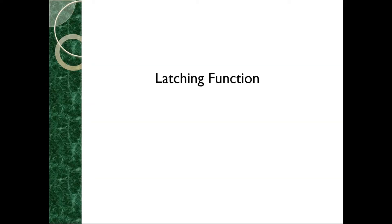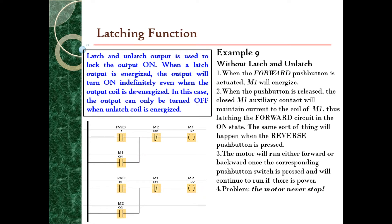You can repeat the output in any rung of your program as long as you replace it using a memory. The final output coil will respond to the state of the memory. Now we move to the latching function. Latch and unlatch output is used to lock the output ON — when you turn on the ON button, you want the output to remain on even when you release the button. This is very useful in real PLC automation implementation.